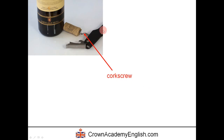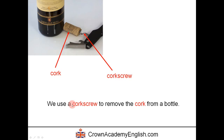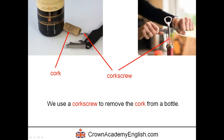This black object is called a corkscrew. And this is called the cork. We use a corkscrew to remove the cork from a bottle. Here is another example — a slightly different one, but it has the same name: a corkscrew.